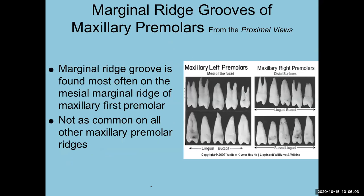The mesial surface shows a developmental fossa. The mesial marginal groove crosses the mesial marginal ridge and extends onto the mesial surface. The facial cusp is wider and longer than the lingual cusp. The key identifying characteristics of the maxillary first premolar are: bifurcated roots, mesial marginal groove, mesial developmental fossa going up the root, and the facial cusp being larger and longer.